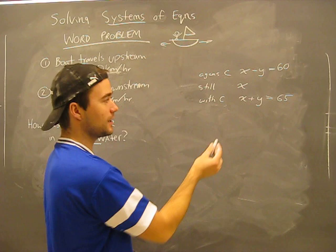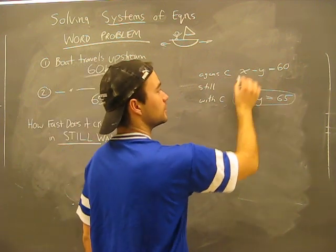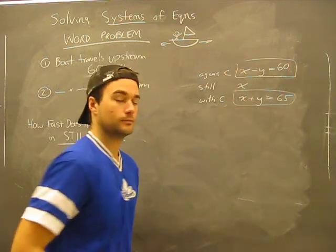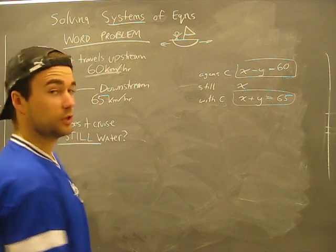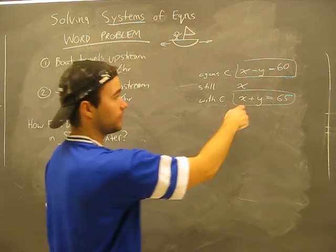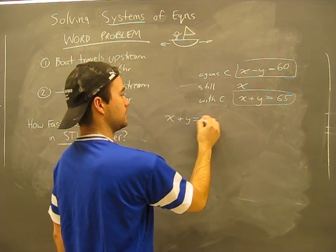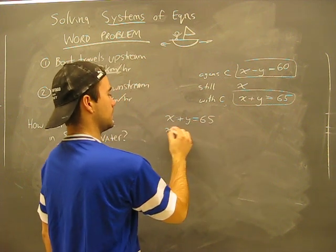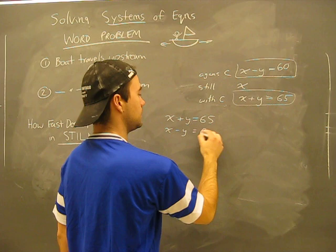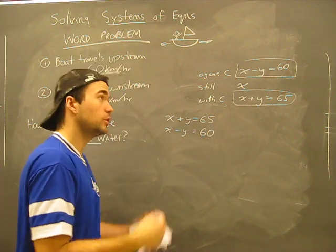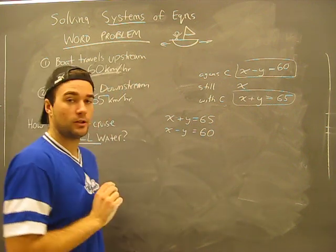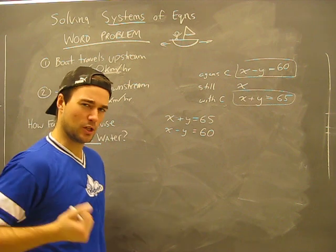Guess what we have? We have a couple of equations. Looks pretty easy to me now. All we've got to do is solve for these guys. So here we have x plus y is 65, x minus y is 60. So we can do substitution or elimination. I'm going to do elimination because I like being the eliminator.